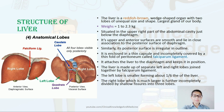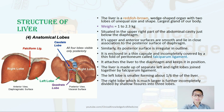The posterior surface of the liver is irregular in outline and covered by a thin capsule, completely covered by a thin fold of peritoneum called the falciform ligament. It attaches the liver to the diaphragm and keeps it in position. The liver is made up of separate left and right lobes joined together by the falciform ligament. The left lobe is smaller compared to the right lobe, and the right lobe is further incompletely divided by shallow fissures into three lobes.